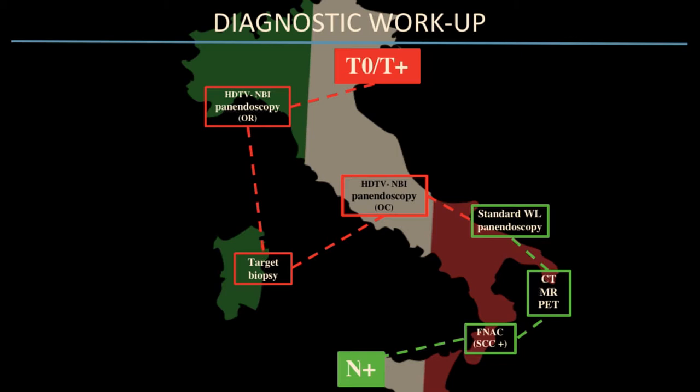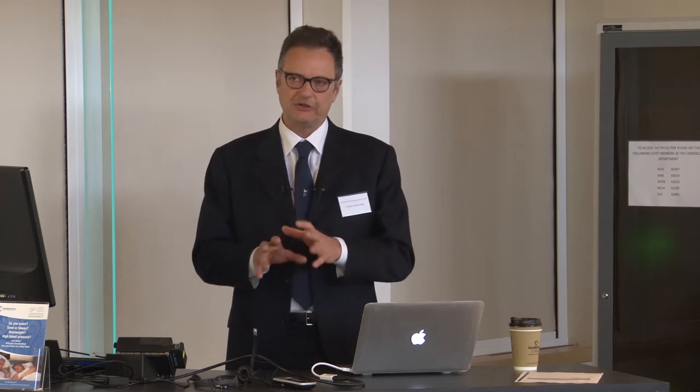The standard workup for unknown primary starts from cytology, which is the gold standard for diagnosis, followed by complete imaging workup with CT, MRI, and PET, combined with standard white-light panendoscopy. In our center, we modified this workup by introducing panendoscopy with NBI and targeted biopsy in the office when a suspicious area is recognized with bioendoscopy.